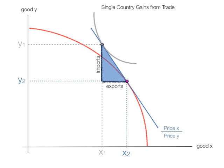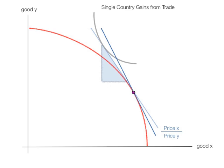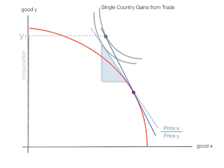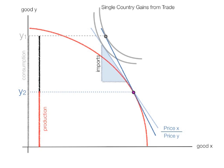Let me shade in the triangle in blue. Now, imagine the price of X goes up and the price of Y remains constant — the slope of this line becomes steeper. The country's production level shifts down and its consumption level is on a new indifference curve. It produces at the red level and consumes at the gray level, so both production and consumption have increased. The level of consumption is Y1, and consumption is greater than production, so the country has to import to make up the difference. The imports are the height of the triangle.